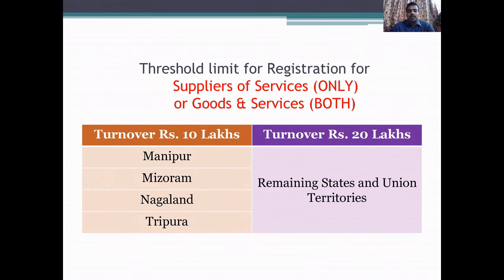The third category is the threshold limit for registration for suppliers of services — which is only services, or it can be goods and services both. Under the turnover of Rs. 10 lakhs: the states of Manipur, Mizoram, Nagaland, and Tripura. The remaining states and union territories come under the category of Rs. 20 lakhs. If you notice, Manipur, Mizoram, Nagaland, and Tripura in any of the three cases come under the category of aggregate turnover of Rs. 10 lakhs.